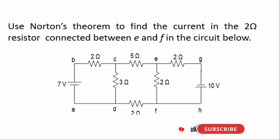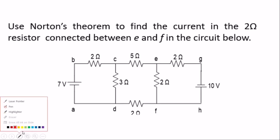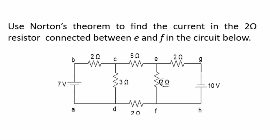Hello guys, welcome to Prof1YT channel. On this video we're going to learn how to find the current in the 2 ohm resistor using Norton's theorem. We are going to use superposition to solve this. With superposition, we deactivate one source and work with one source, then deactivate the other source and work with the other source. We need to find the current in that resistor using Norton's theorem.